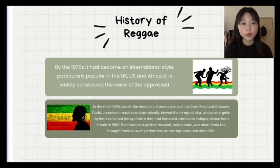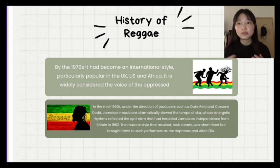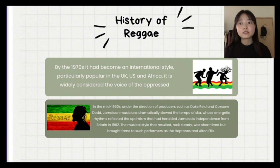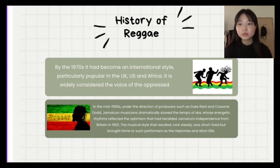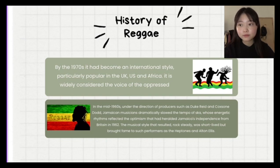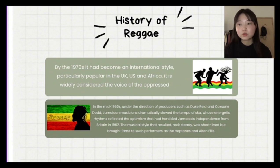Next is the history of reggae. By the 1970s, it had become an international style, particularly popular in the UK, US and Africa, and is widely considered the voice of the oppressed. In the middle of the 1960s, under the direction of producers such as Duke Reid, Jamaican musicians dramatically slowed the tempo of ska, whose energetic rhythm reflected the optimism that had accompanied Jamaica's independence from Britain in 1962. The music style that followed, known as rocksteady, was short-lived but brought fame to such performers.